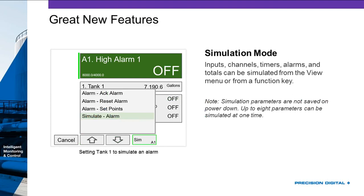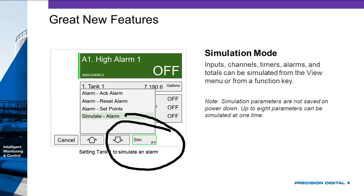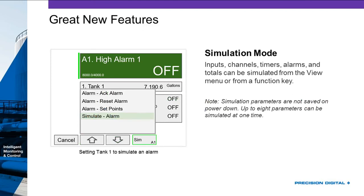Another great new feature is simulation mode. Simulation mode, without changing the inputs, makes the Consolidator see and behave as if that input is changing. So if I want to test out my system but don't actually want to provide a different 4-20mA input or pulse input, I can just simulate that input. I can set it up as one of the soft keys on the bottom of the screen — there are five programmable keys on the bottom of every screen.